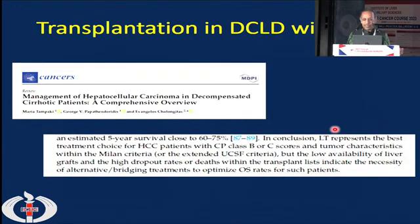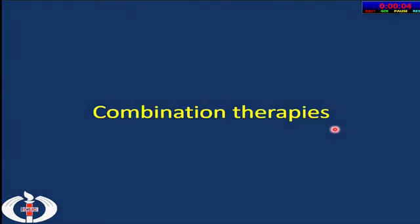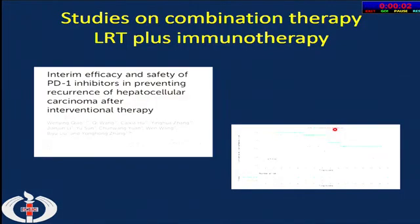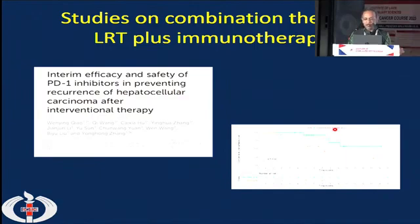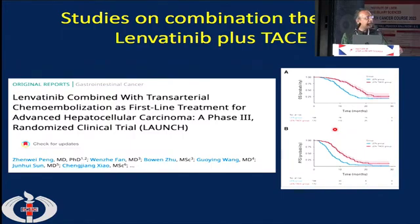Many studies have shown that transplantation in decompensated CLD with small tumors leads to much better outcomes. Regarding combination therapy — many studies have come up with locoregional therapy plus immunotherapy. We have incorporated combination therapy in adjuvant or neoadjuvant systemic therapy into our INASL BCLC staging.